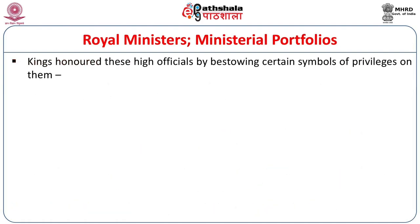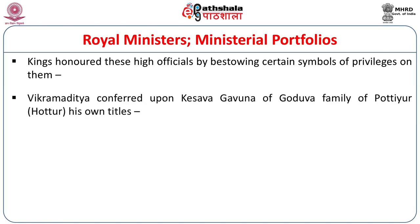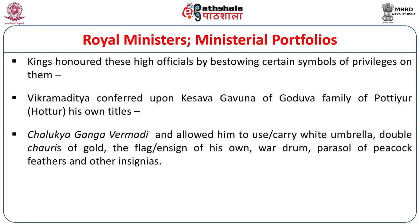Kings honoured high officials by bestowing certain symbols and privileges upon them. For instance, Vikramaditya conferred upon Kesava Gavunda of the Goduva family of Pottyur (Huttur) his own royal title Chalukya Ganga Vermadi, and allowed Kesava Gavunda to carry a white umbrella, double gold chauris, his own flag or ensign, war drum, parasol of peacock feathers, and other insignias. Thus the king allowed high officials to use royal insignias, and many such honours were bestowed upon senior officials.